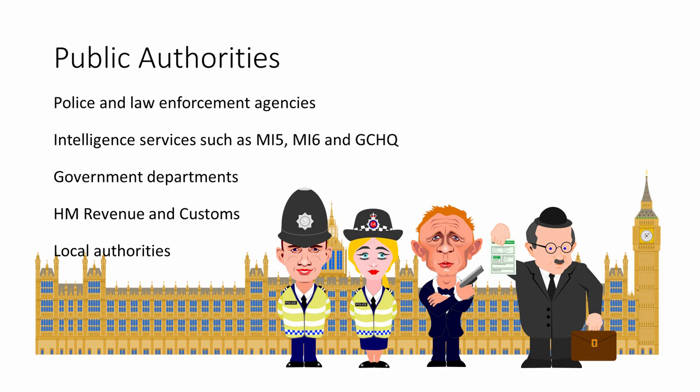Under the Regulation of Investigatory Powers Act, local authorities are only allowed to carry out covert surveillance if their intention is to prevent or detect a crime, and only if that crime carries a prison sentence of at least six months. Having said that, there have been some interesting applications of this power. For example, one county council put three children and their parents under continuous covert surveillance to check whether they lived in a particular school catchment area. Other councils have used it to monitor breaches of planning regulations, fly-tipping, dog-fouling, and even underage smoking.